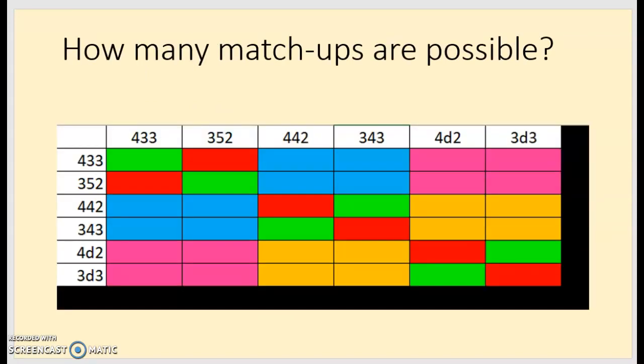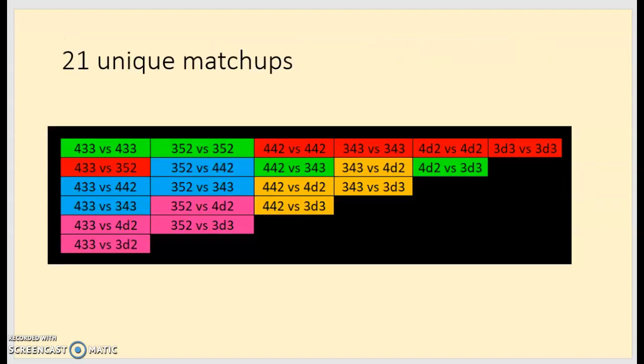Okay, so if six basic formations exist, how many matchups are possible? So here we see six, here we see six, there's 36 outcomes here, but some of these are repeats. For example, if you look right here, 4-3-3 versus 3-5-2, but then right here we have 3-5-2 versus 4-3-3. So if we get away, if we cut away all the repeats, then only 21 unique matchups are out there.